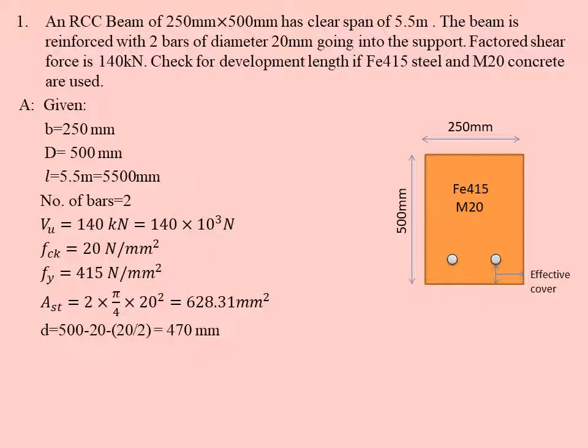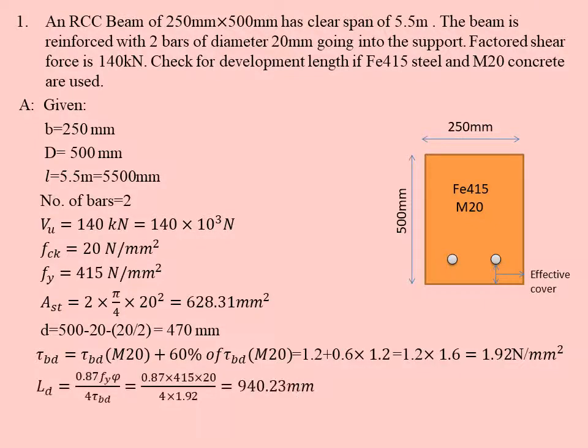Now we find development length, but before that we have to find τbd, that is the bond stress that takes place on the interface of the steel and concrete. In the IS code for τbd bond stress of concrete, we have many stress values for different grades, the nominal bond stress already given to us in the table. But here we have to find the total τbd for deformed bars. For deformed bars we have to add 60% of τbd of M20 to the nominal shear stress. That is 1.2 + 0.6 × 1.2 = 1.92 N/mm².